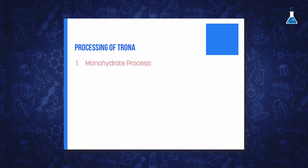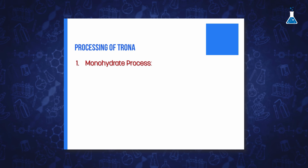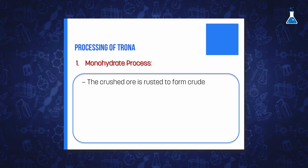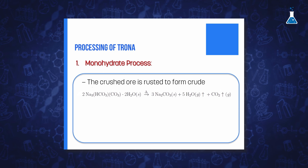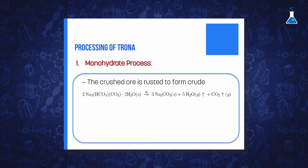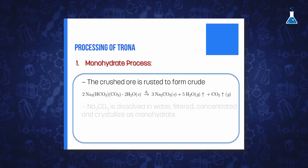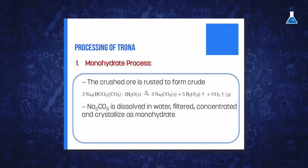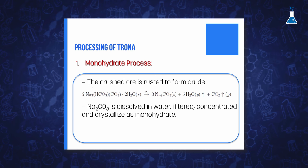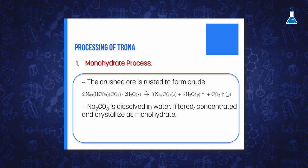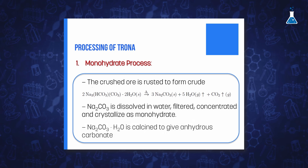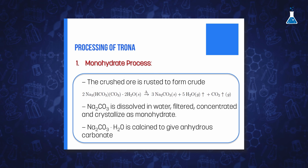The first is known as the monohydrate process, which consists of first roasting the crushed ore to form crude carbonate, as illustrated in the following equation. Sodium carbonate is then dissolved in water and the insoluble impurities are filtered off. The resulting solution is finally concentrated to crystallize the monohydrate, which is then calcined to give anhydrous sodium carbonate.